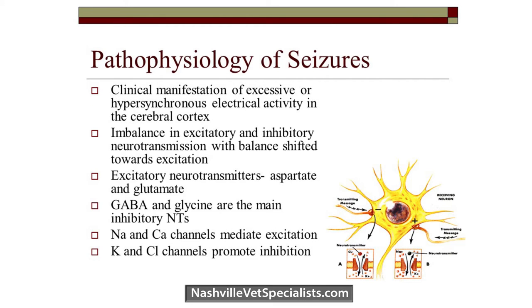Seizures are basically the manifestation of excessive electrical activity originating in the cerebral cortex. There's excessive excitation in the brain that leads to seizures, and this can be either due to excessive excitatory neurotransmitters or inhibition of the inhibitory neurotransmitters. The medications that treat seizures usually target one of these mechanisms.